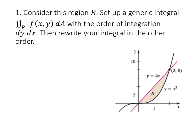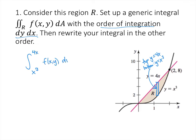We're asked to do the order of iteration dy dx, which means we want to slice this vertically. The height of this box is the vertical slice. The top of the box is on the function y equals 4x, and the bottom of the box is on the function y equals x cubed. So in my generic inner integral — the dy integral — my lower bound is going to be x cubed and my upper bound is going to be 4x, and I integrate the function f with respect to y.